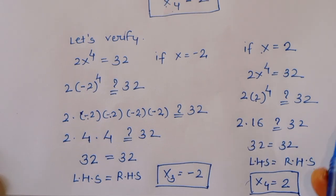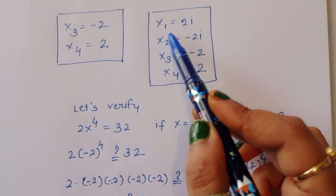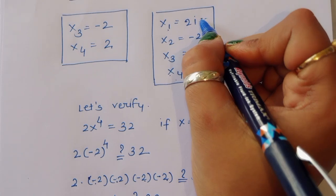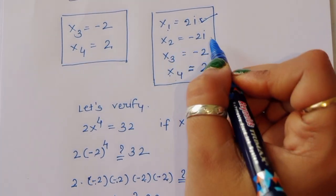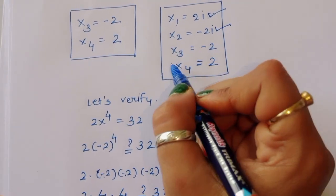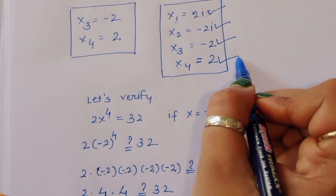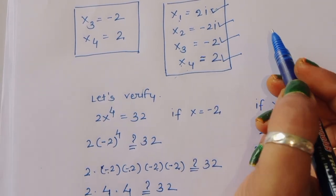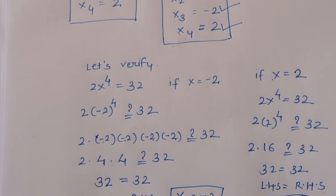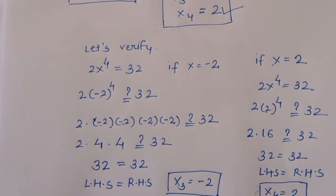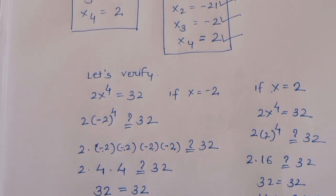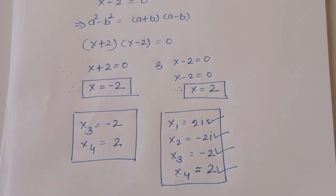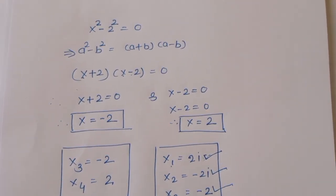So we got four solutions: x₁ = 2i, x₂ = -2i, x₃ = -2, and x₄ = 2. This is the complete solution. Thank you.